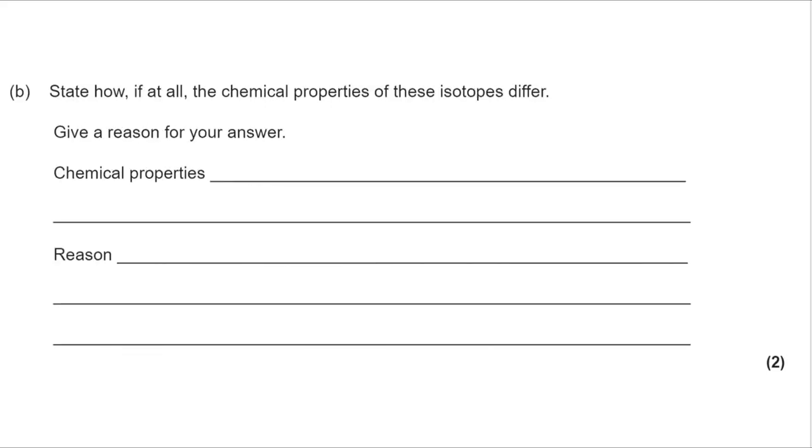Moving on to part B, do we think the chemical properties of these isotopes will differ and what's the reason for your answer? The chemical properties will be the same and the reason for that is that they have got the same electronic structure, and remember when magnesium reacts it loses its two outer electrons. That's impacted on by attraction to the nucleus and shielding, nothing to do with the number of neutrons.